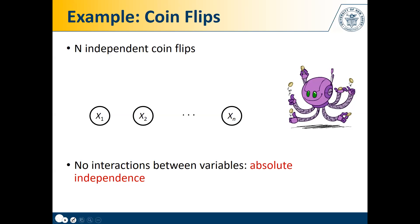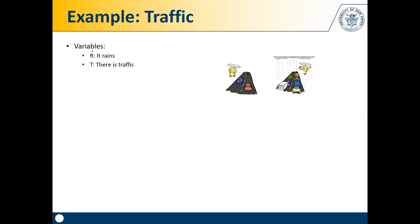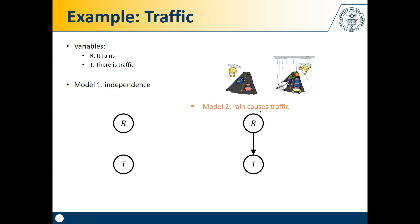Let's look at a more interesting example. We have two variables — whether or not it's raining (R) and whether or not there's traffic (T). We can first model the joint probability distribution assuming absolute independence, which doesn't help us much. Or we can represent this through a Bayes net where rain is seen as the cause of traffic, with conditional dependence between traffic and rain represented with a directed edge from R to T. An agent using this model with conditional dependence is better.